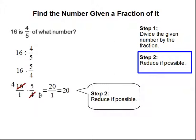Then you simply multiply across. So 4 times 5 is 20 and 1 times 1 is 1. And 20 over 1 is the same thing as 20.